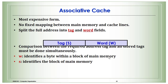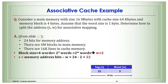For associative cache mapping, the memory address is split into only two parts: the word field (w bits, identifying a byte within a block) and the tag field (s bits, identifying the block of main memory). Using the same example, w = 2 bits (from block size of 4 = 2 squared), and the tag = 24 − 2 = 22 bits.